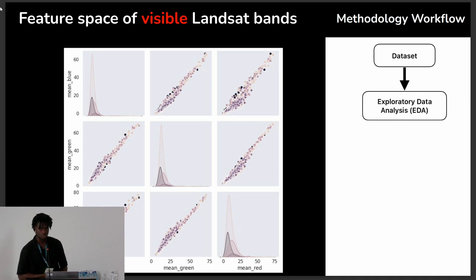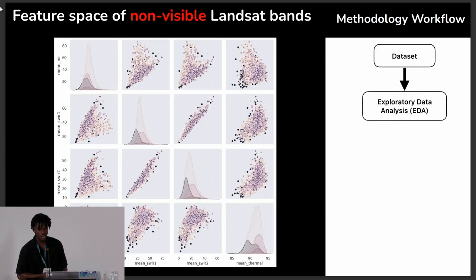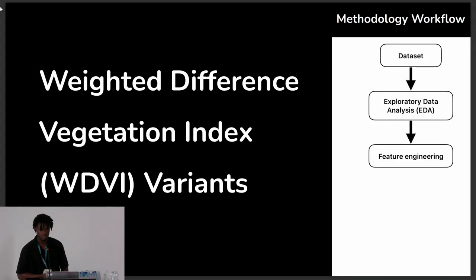Looking at the RGB bands on screen, they show more or less a linear relationship — nothing really useful for separating the classes. So we switched to non-visible bands such as the shortwave infrared one and two and the thermal bands. These better separate the classes to an extent, so we took more interest in them. We also found from previous literature that vegetation indices can prove efficient for mapping soil erosion, so we used a variant of the WDVI.